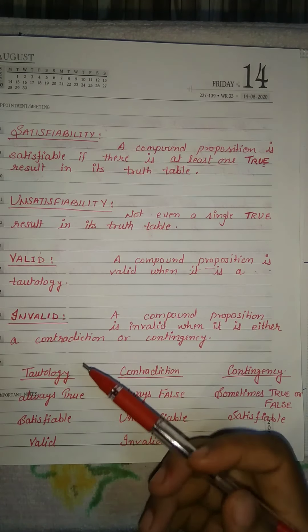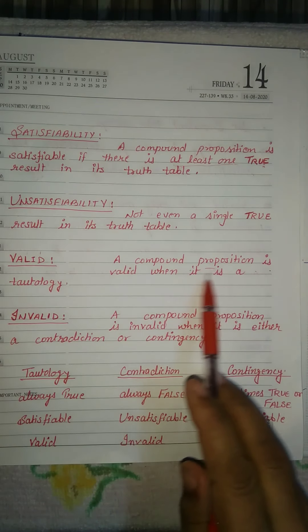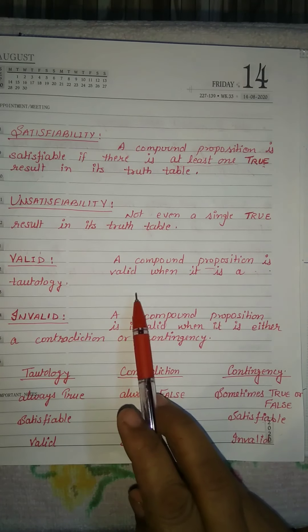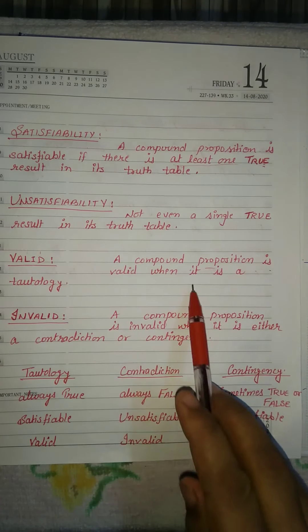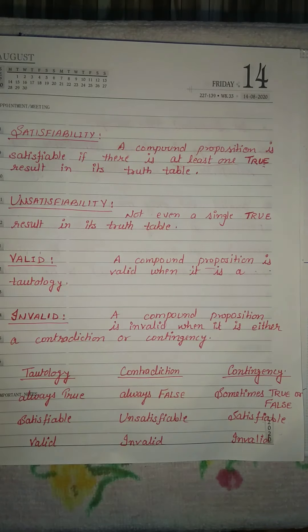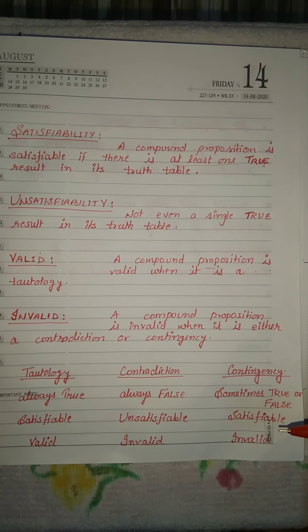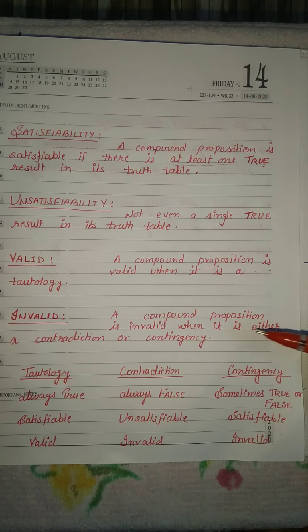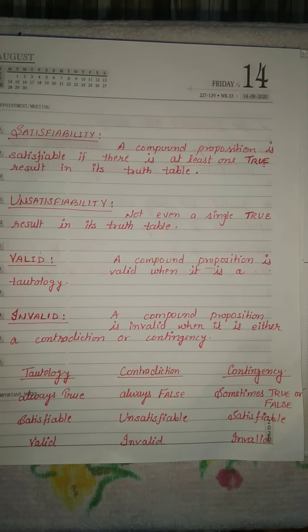Now, what is valid? A compound proposition is valid when it is a tautology. Tautology means all ones — all ones present in the truth table is known as tautology.